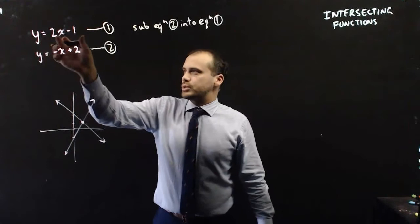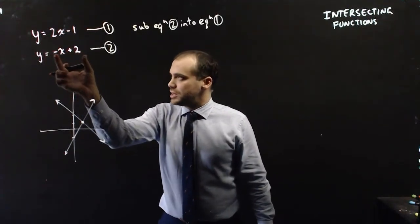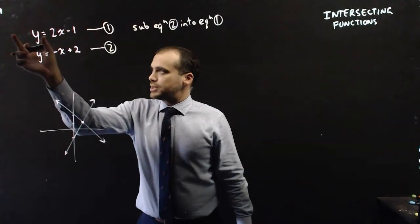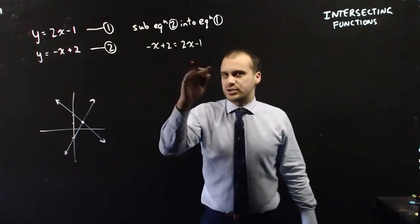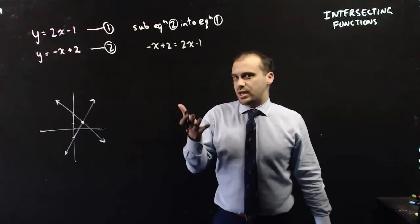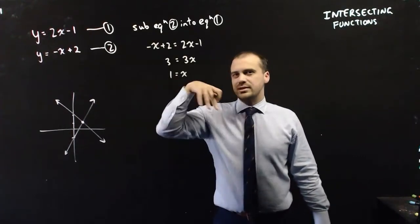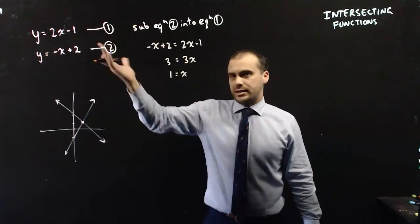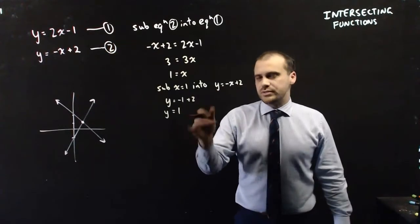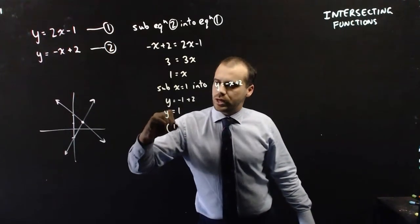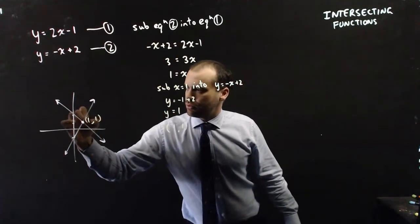So if y equals 2x minus 1 and y equals negative x plus 2, I can take this and sub it into the other equation for y. Then it's just a matter of solving for x, finding out that x equals 1, and then subbing x equals 1 back into one of those equations. It turns out that our point of intersection is (1, 1).